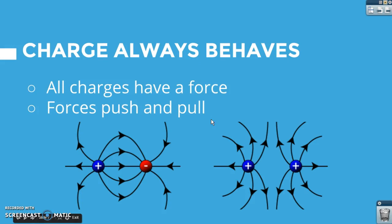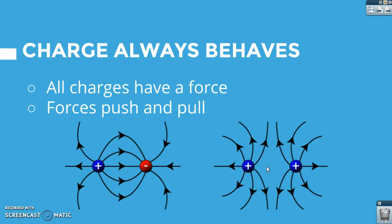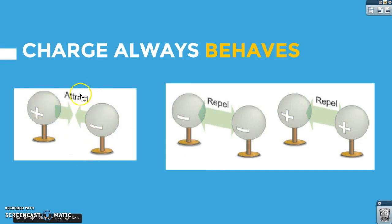Charge is always going to behave the same way — it always has a force, and a force is a push or a pull. These arrows represent those forces. A positive charge is going to attract a negative charge, and positive charges are going to push away from each other. This looks a lot like magnetic relationships. This is a diagram of an electric field, which measures force. Opposite charges attract, and like charges repel.